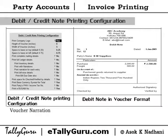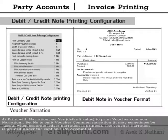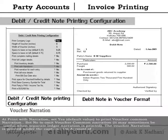For voucher narration, at 'Print with narration' set yes to print voucher common narration, or set no to omit it. It may sometimes be useful when a separate ledger narration is printed. The voucher narration is printed under the caption 'on account of'.